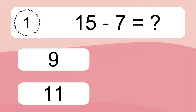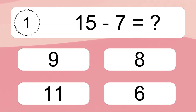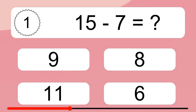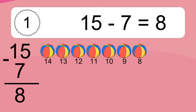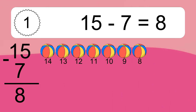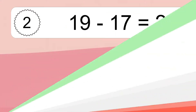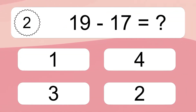15 minus 7 equals what? 15 minus 7 equals 8. Let's count it: 14, 13, 12, 11, 10, 9, 8.